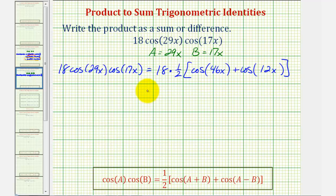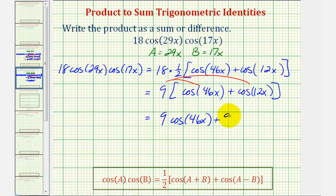And again, now we just simplify, so we have 18 times one-half, that's nine. And the last step is to distribute. So we have nine cosine 46x plus nine cosine 12x. And we have the given product written as a sum.